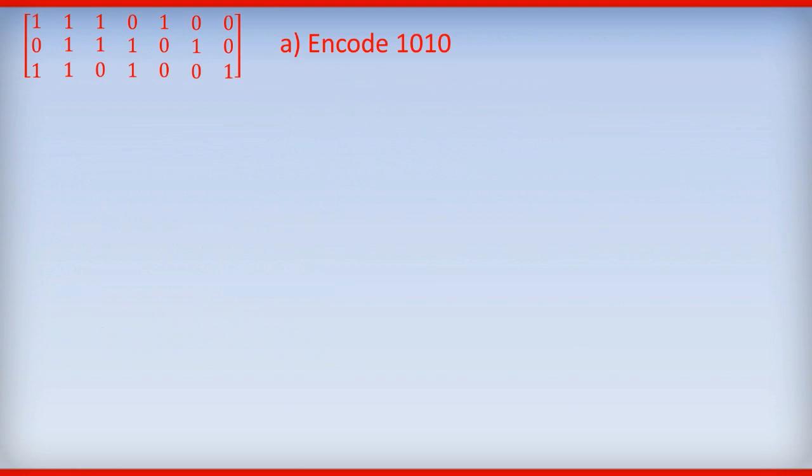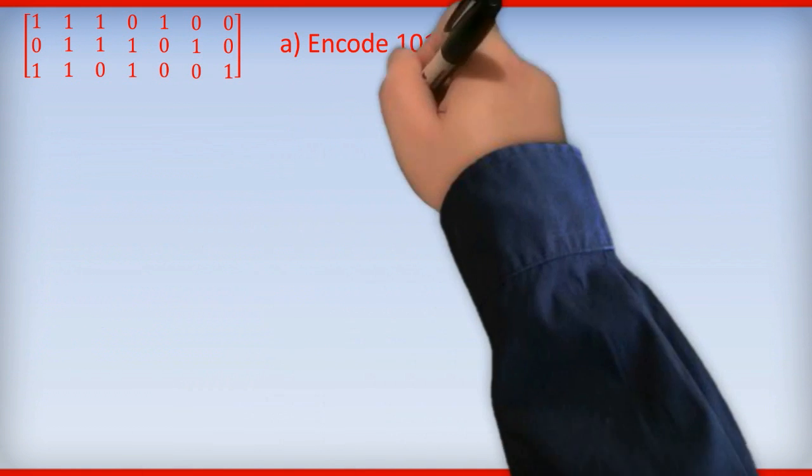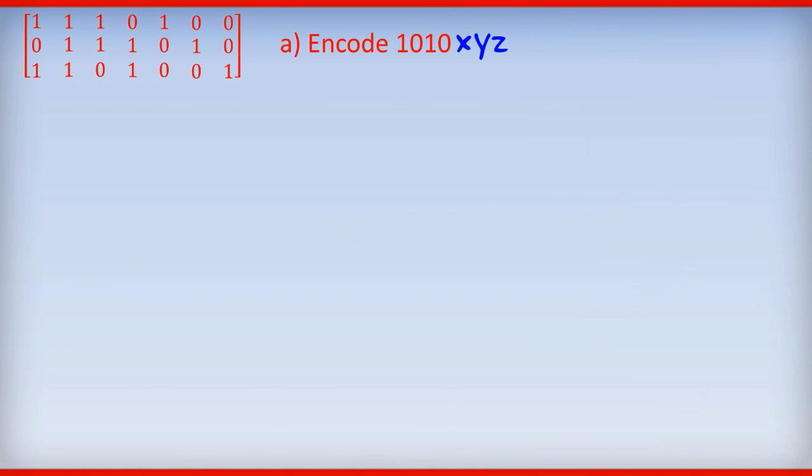Okay, to part A. You can see up the top left the Hamming matrix and the essential information for part A. Now encoding in Hamming code just means that we're going to add three check digits to the end of the number. We're going to add X, Y and Z.